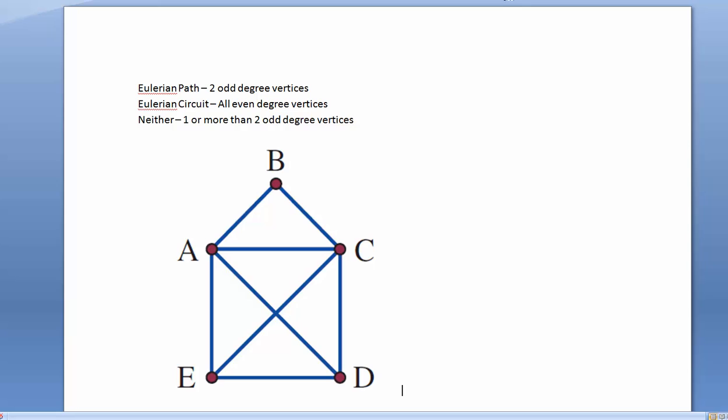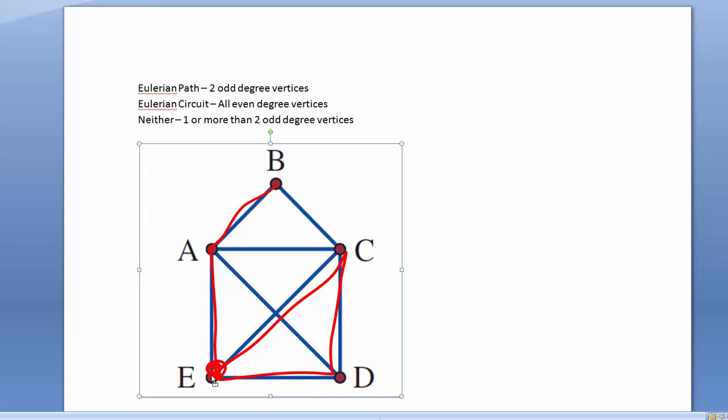So for example, if this was the shape, this house was the shape that I was trying to draw with this cross there, I could try to do it by going from A to B, like this, to there, to there, and I'm stuck, because from there I can't do it.